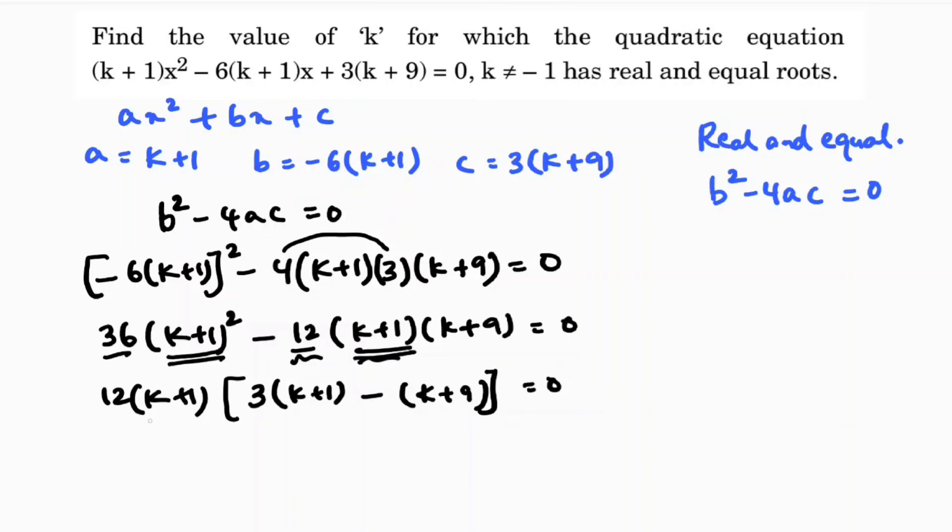We could also equate k+1 = 0, but k should not be -1 as stated in the problem. So this cannot be included and is not the answer. We'll simplify the other part instead.